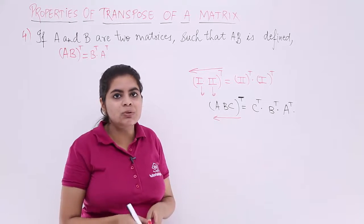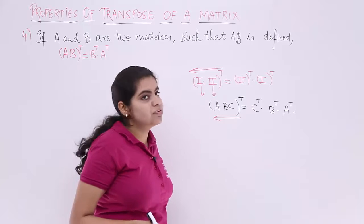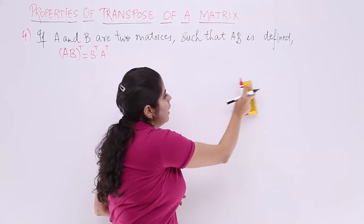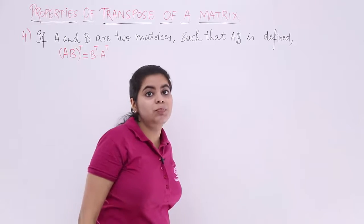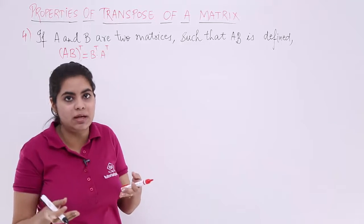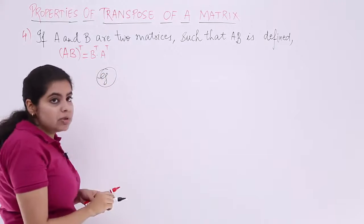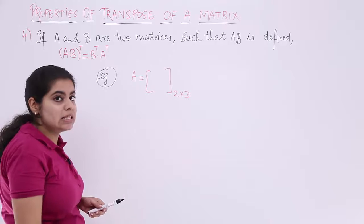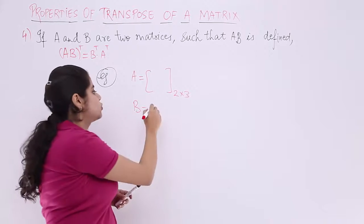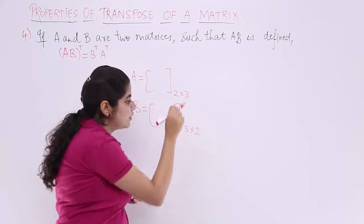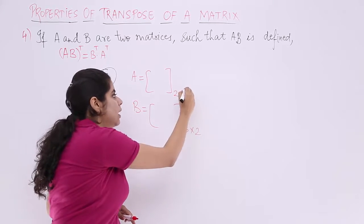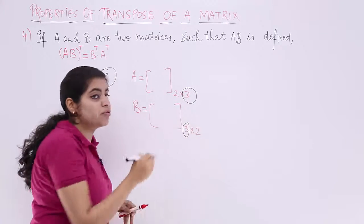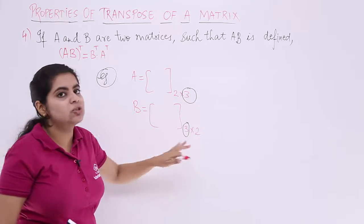Now let's see a numerical illustration which will make things much clearer. We'll be taking two matrices A and B such that the product is defined. I'll take A as a 2×3 matrix and B as a 3×2 matrix. The reason is that the number of columns of the pre-multiplier must equal the number of rows of the post-multiplier, so that AB is defined.